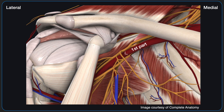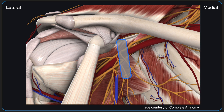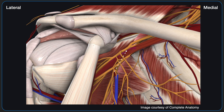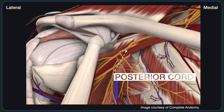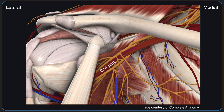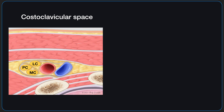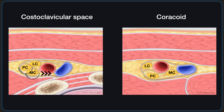As the cords travel distally from the first to the second part of the axillary artery, from the costoclavicular space to the coracoid process, the medial and posterior cords begin to rotate from their position posterior to the first portion of the axillary artery, to their position relative to the second portion of the axillary artery for which they are named. The rotation of the medial and posterior cords is demonstrated here through cross-sectional anatomy.